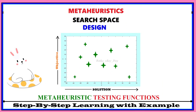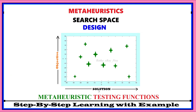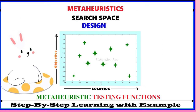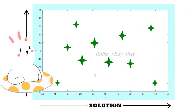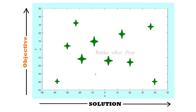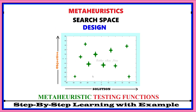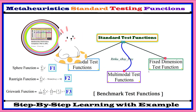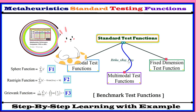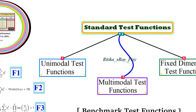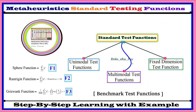This video is based on metaheuristic search space design and metaheuristic testing functions. We will try to understand the search space used in metaheuristic algorithms during the optimization process, and different testing functions used for comparison between different metaheuristic algorithms. We can analyze algorithm performance, stability, convergence speed, accuracy, and efficiency.